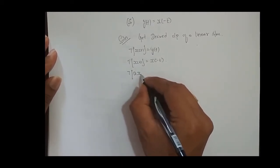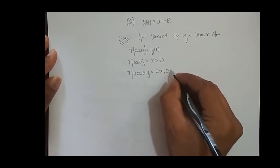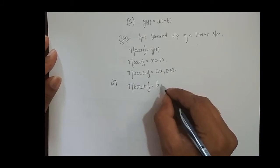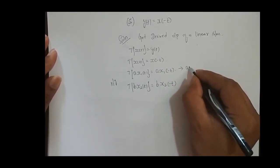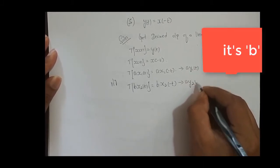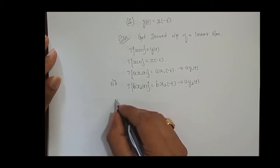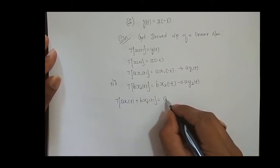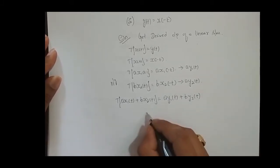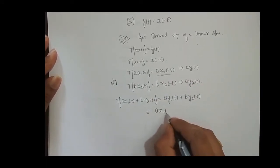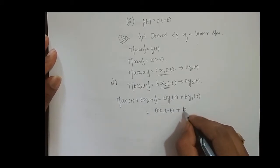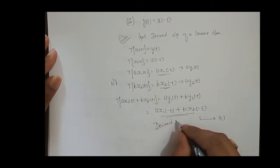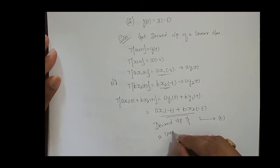We will give the scaled input: transformation of a times x1 of t is equal to a times x1 of minus t, which is a times y1 of t. Similarly, transformation of b times x2 of t is equal to b times x2 of minus t, which is b times y2 of t. Now we will combine the inputs: a times x1 of t plus b times x2 of t equals a times y1 of t plus b times y2 of t, where b times x2 of t gives b times x2 of minus t. This is the desired output of a linear system.